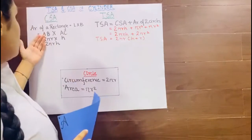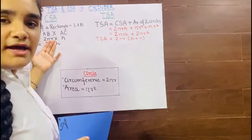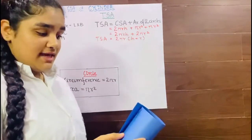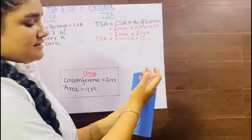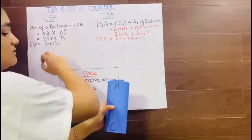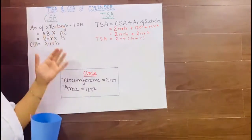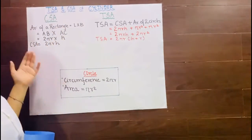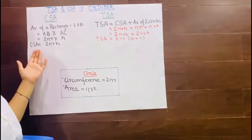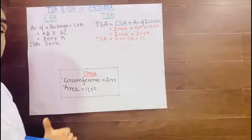So here instead of AB I have written 2πr. Now I will fold it again and I will see that AC is the breadth of the circle and it is also making the height of the cylinder. So here I have written H and hence we get the formula of CSA that is 2πrH. Now I will go on to TSA.